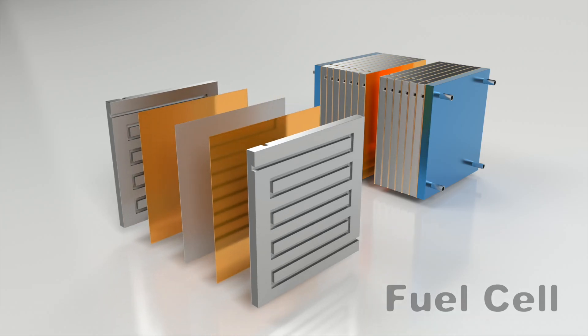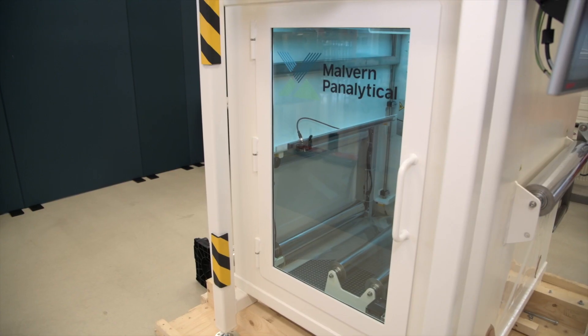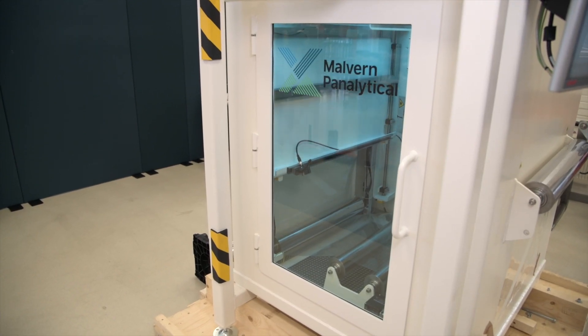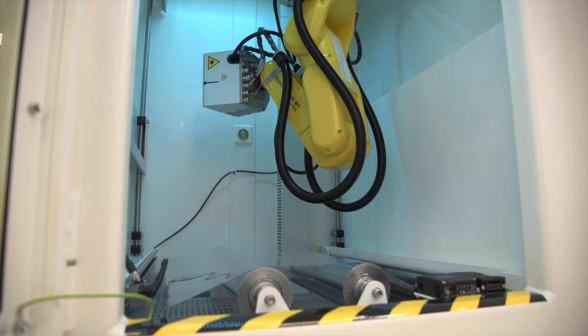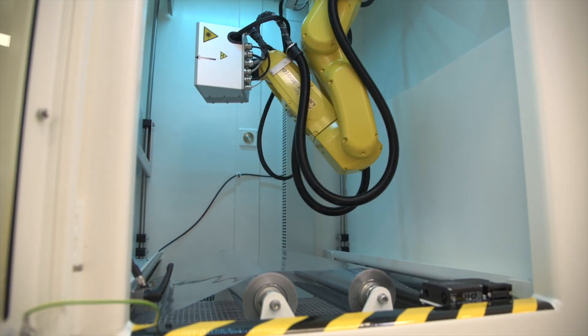Creating the catalytic coated membranes needed for hydrogen electrolyzers and fuel cells is delicate work, but it's made more efficient and cost effective thanks to real-time accurate elemental analysis with the Epsilon X line from Malvern Panalytical.